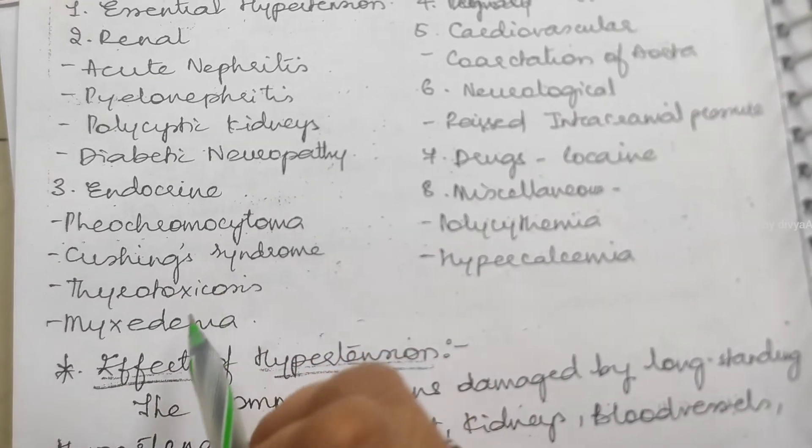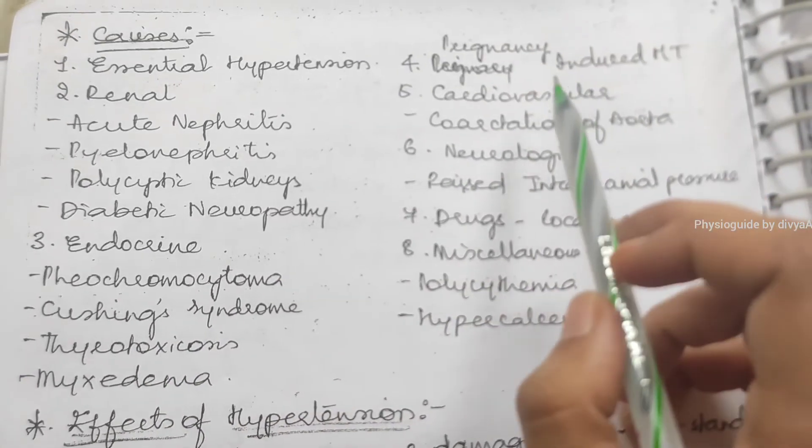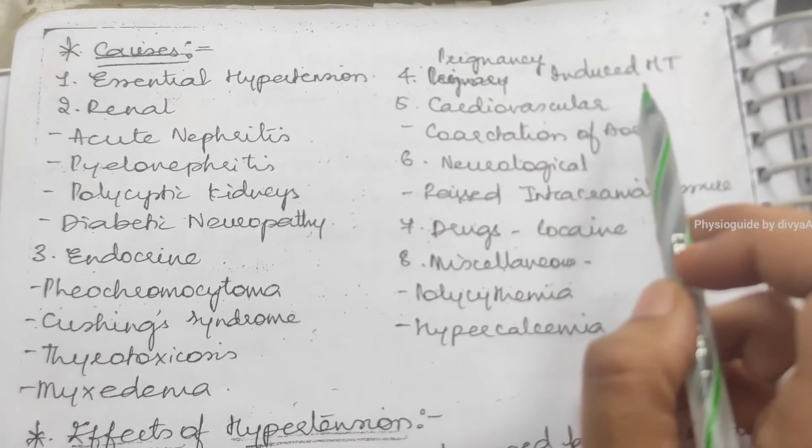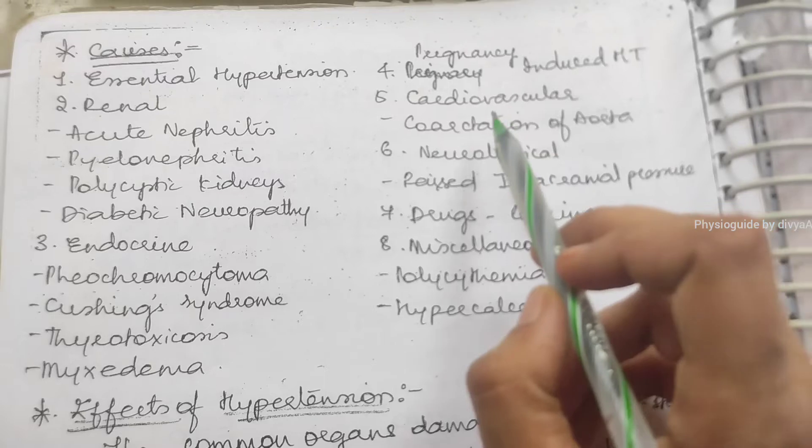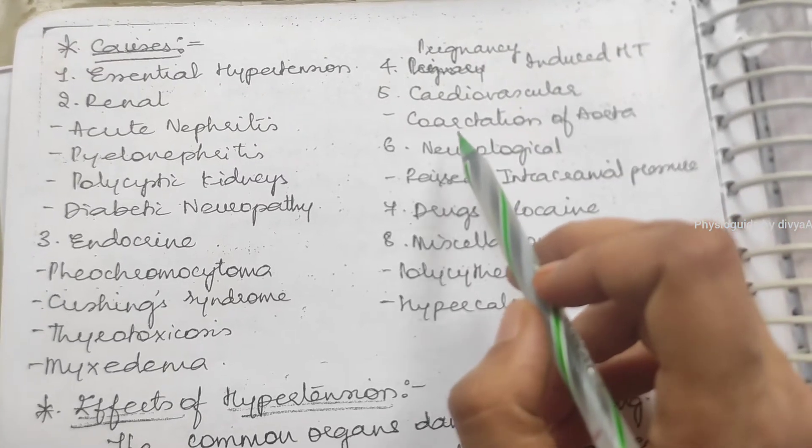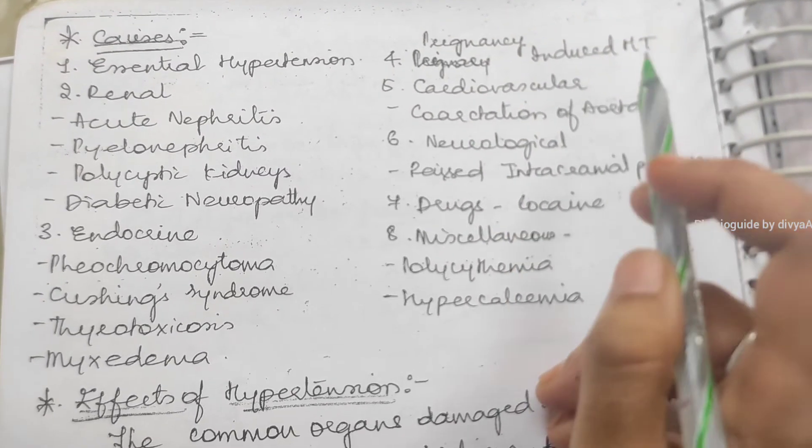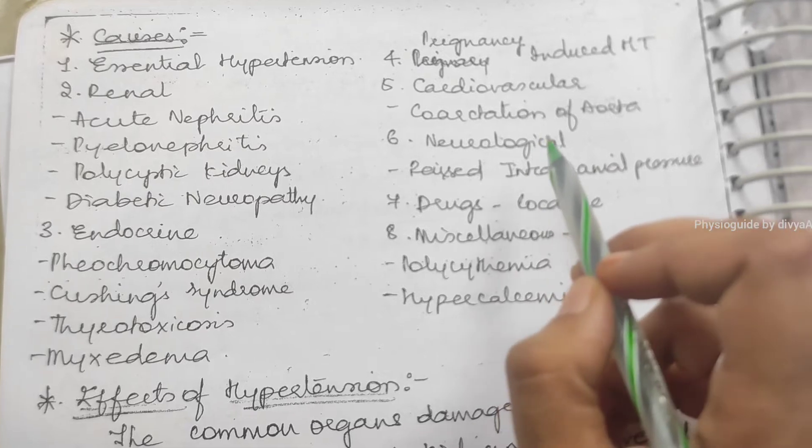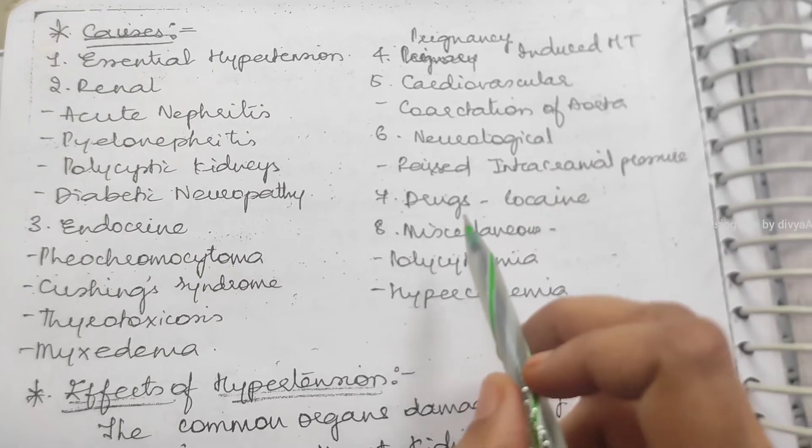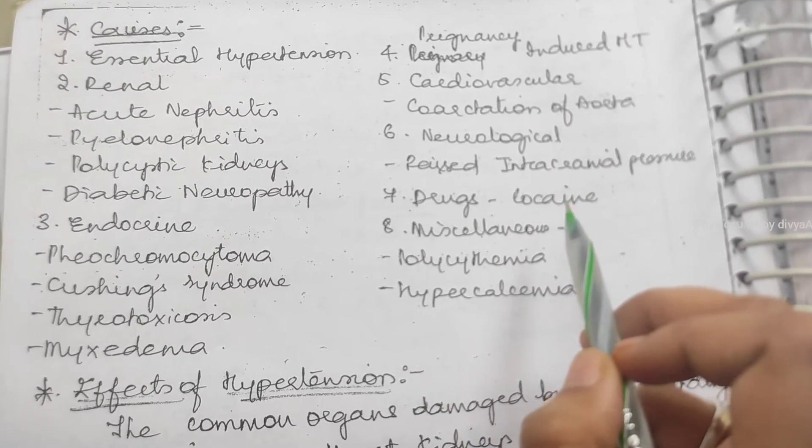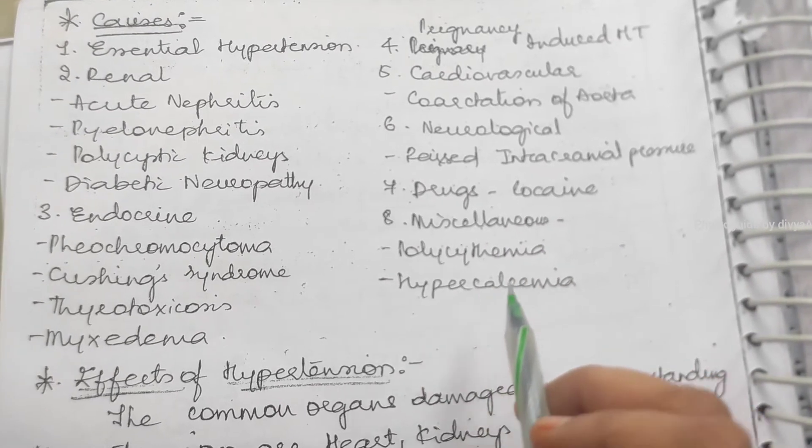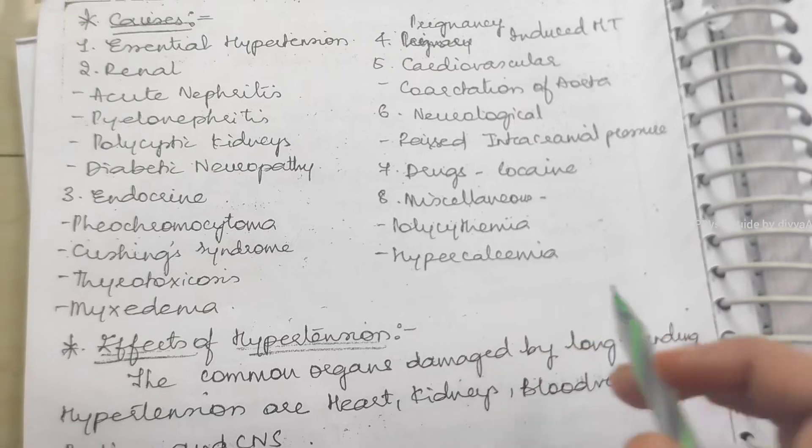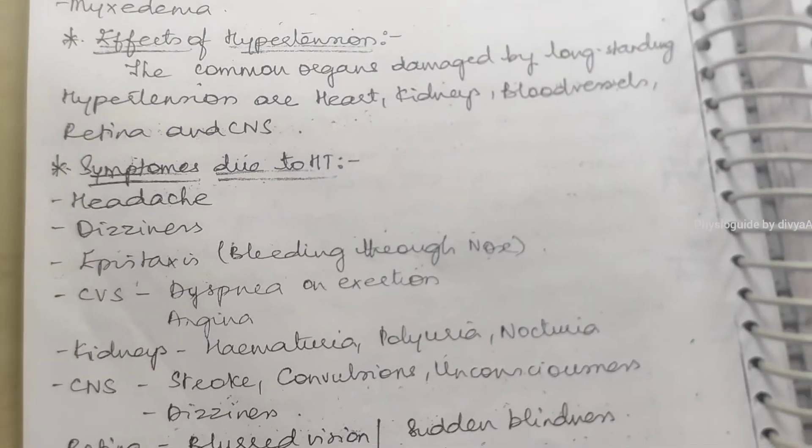Endocrine causes like pheochromocytoma. Other problems like polycythemia, hypercalcemia.